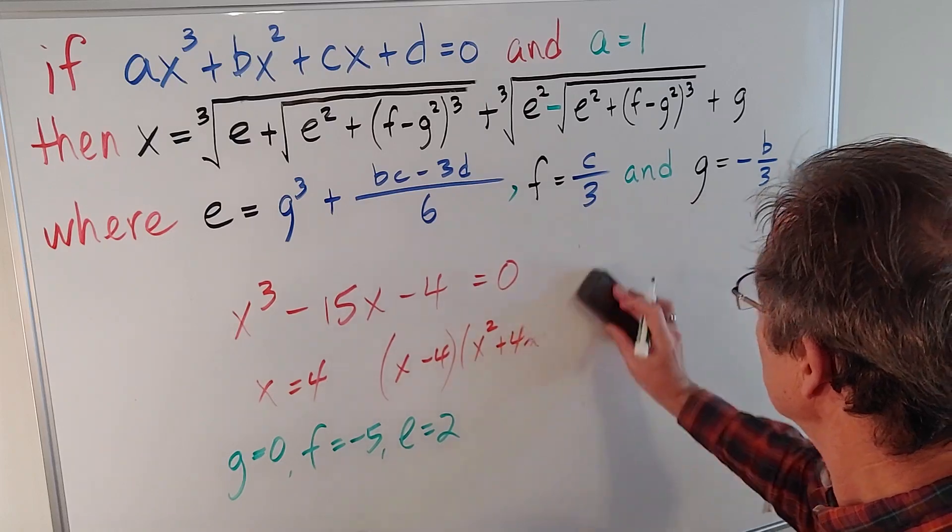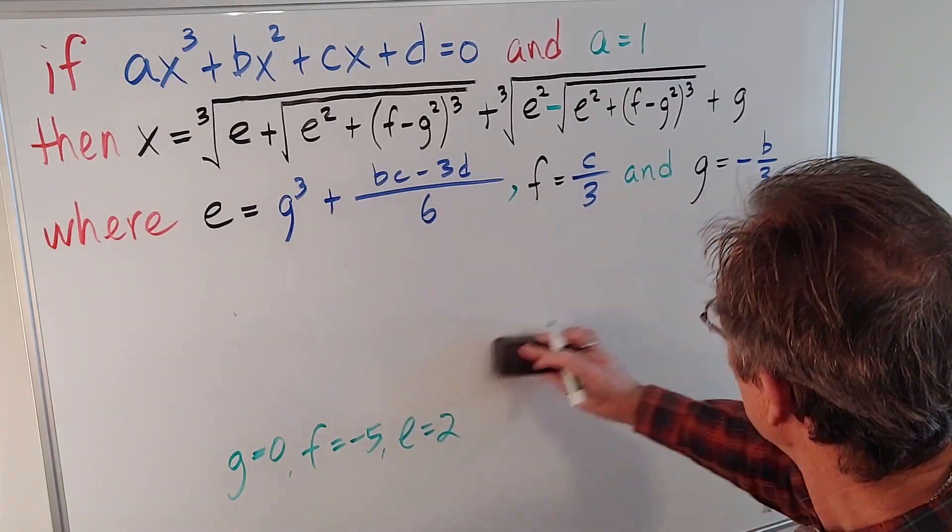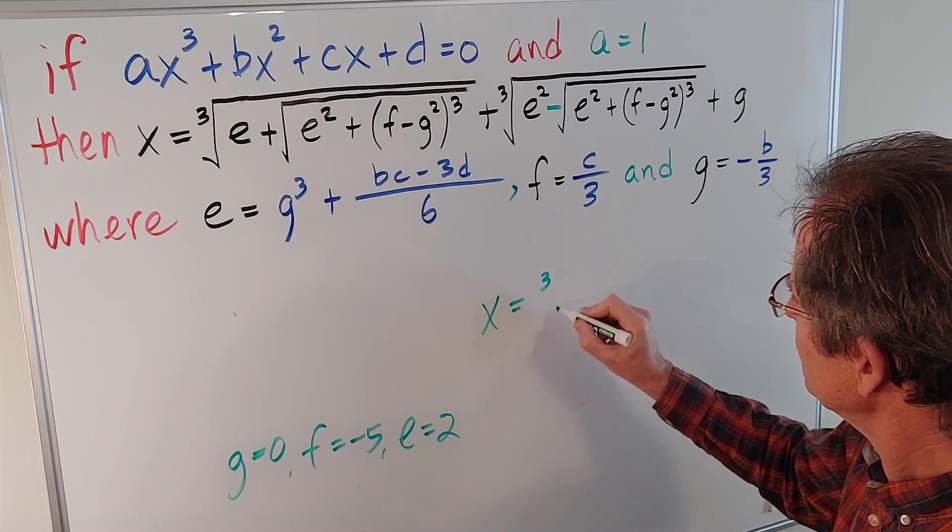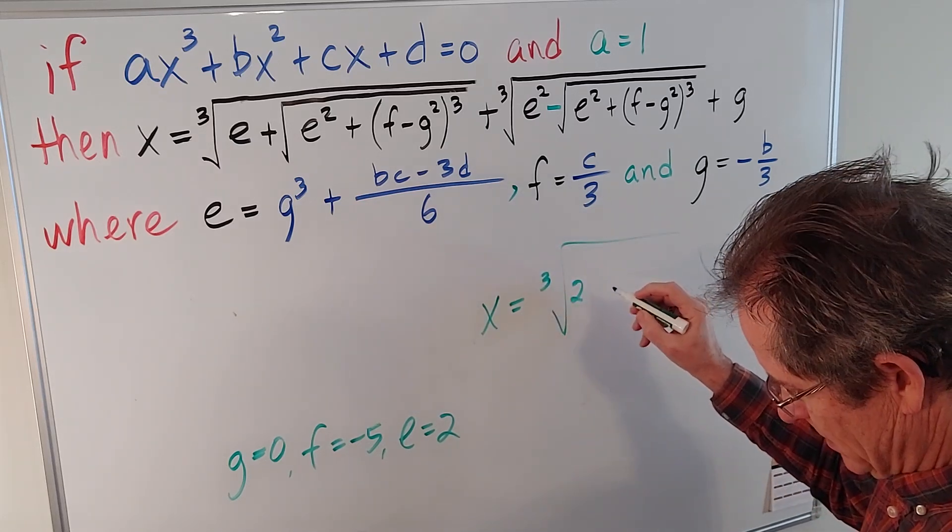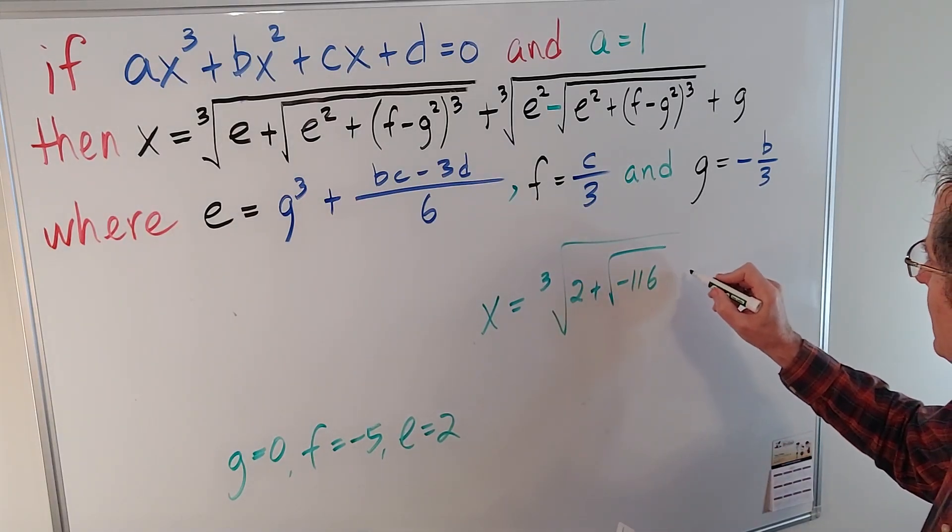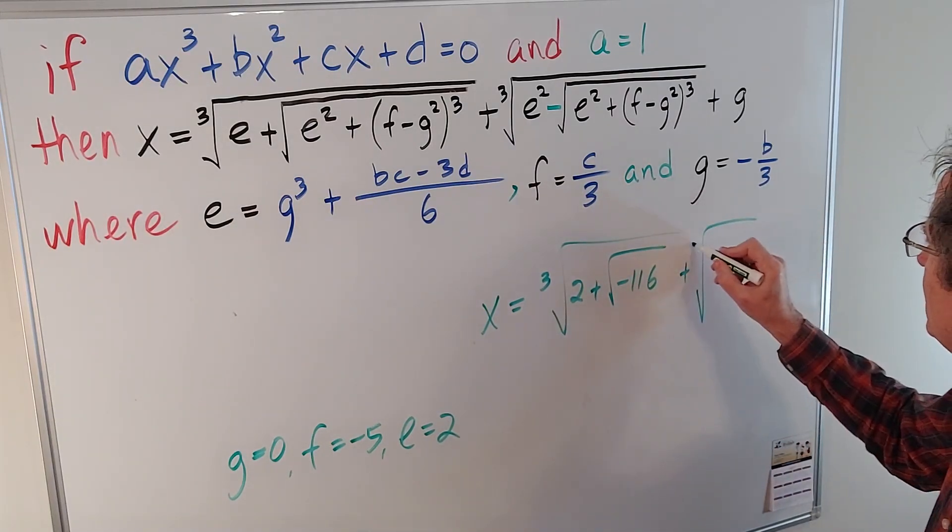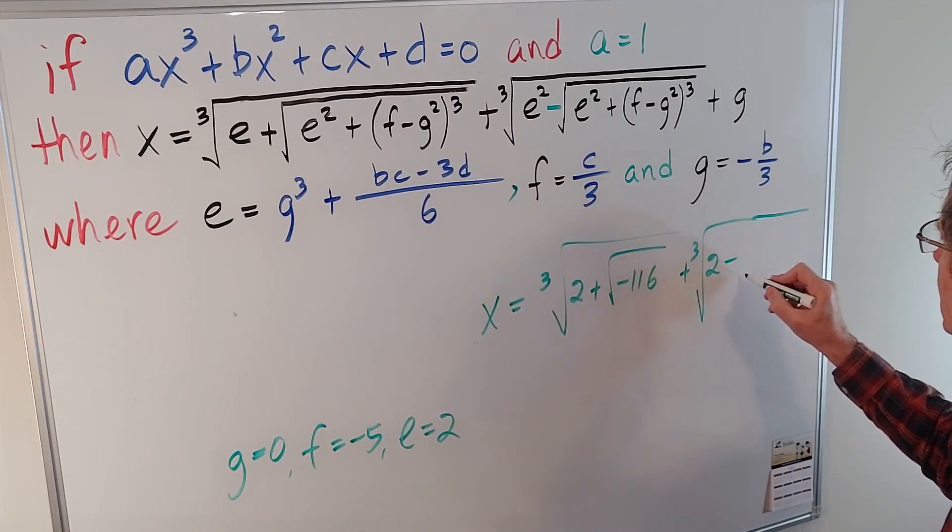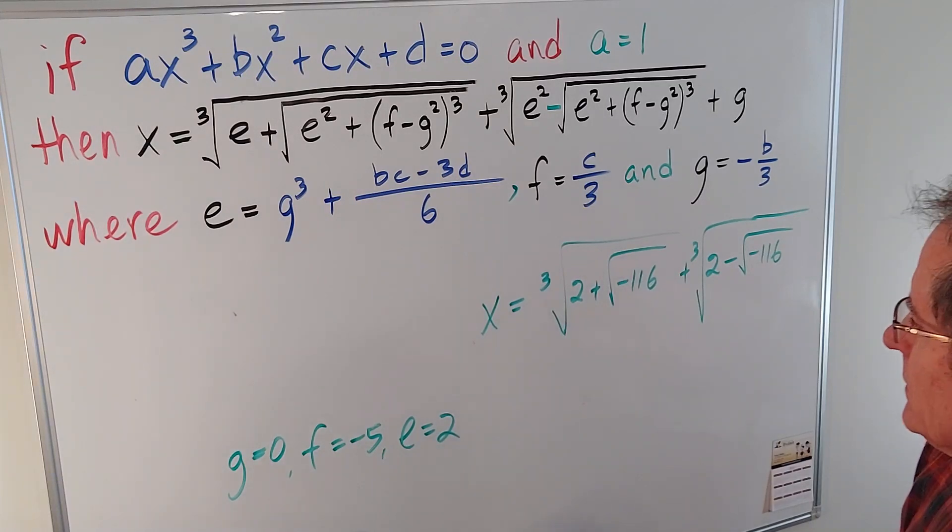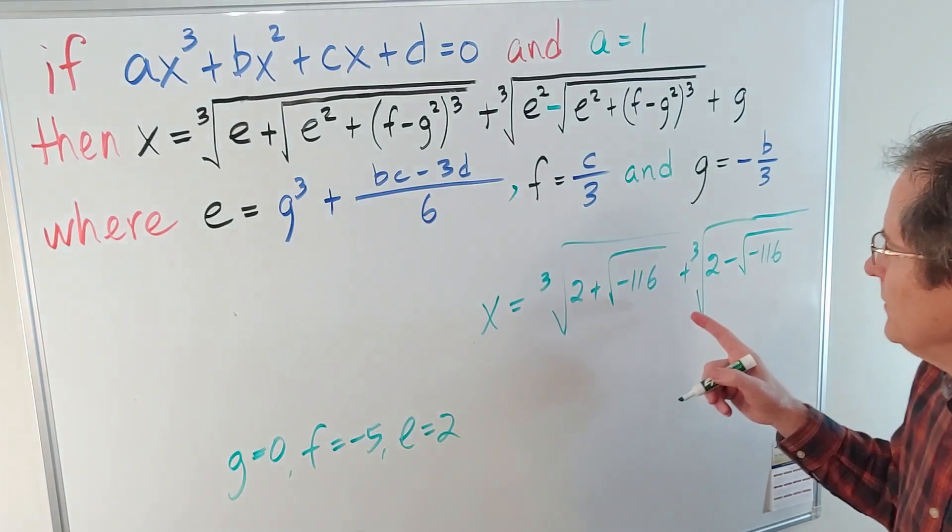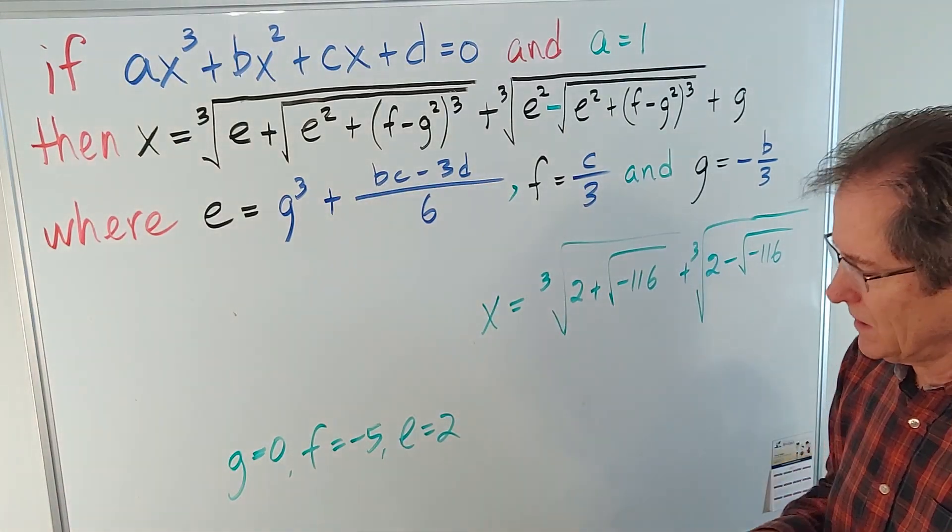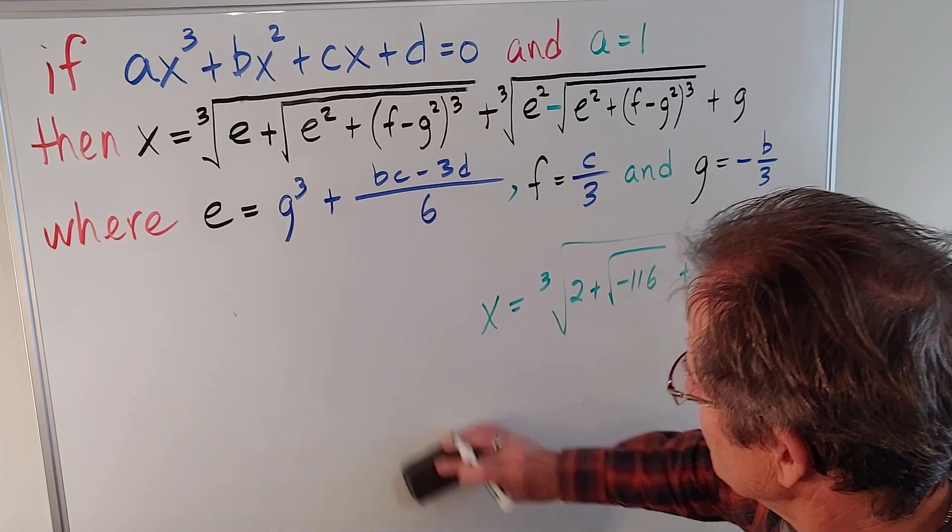If we substitute those into our cubic formula above, you're going to get x equals the cubed root of 2 plus the root of negative 116, plus 0. So how in the world are we going to get the answer I just had from this? Well, again, you need to know how to take the cubed root of, in this case, imaginary numbers. But it will work out to give the same answers. I'll just take my word for it for now.